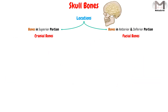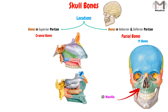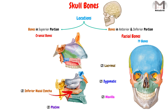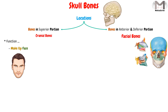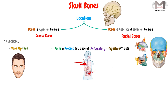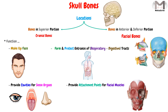Regarding the facial bones, they are 14 bones. These bones are 2 bones each for the maxilla, the zygomatic, the palatine, the lacrimals, and the inferior nasal concha, while one bone for the vomer and one for the mandible. The functions of these bones are also important: the first is they will make up the face; they will also form and protect the entrance of the respiratory and digestive tracts; the third function is they will provide cavities for the sense organs, which are the eyes, the mouth, and the nose; and the last function is they will provide an attachment point for the facial muscles.